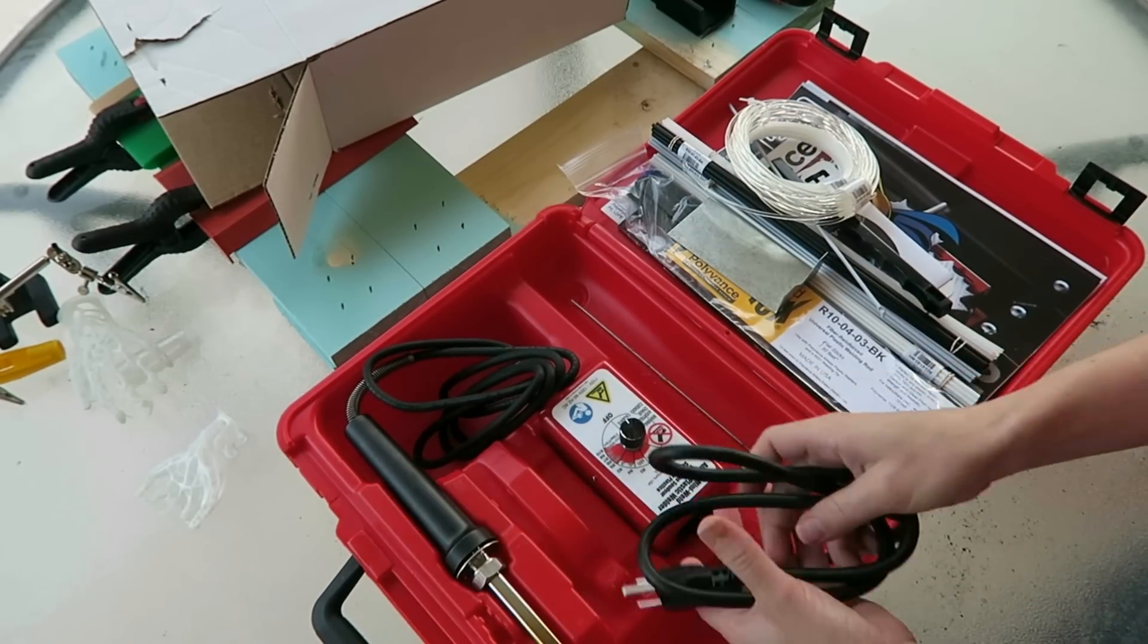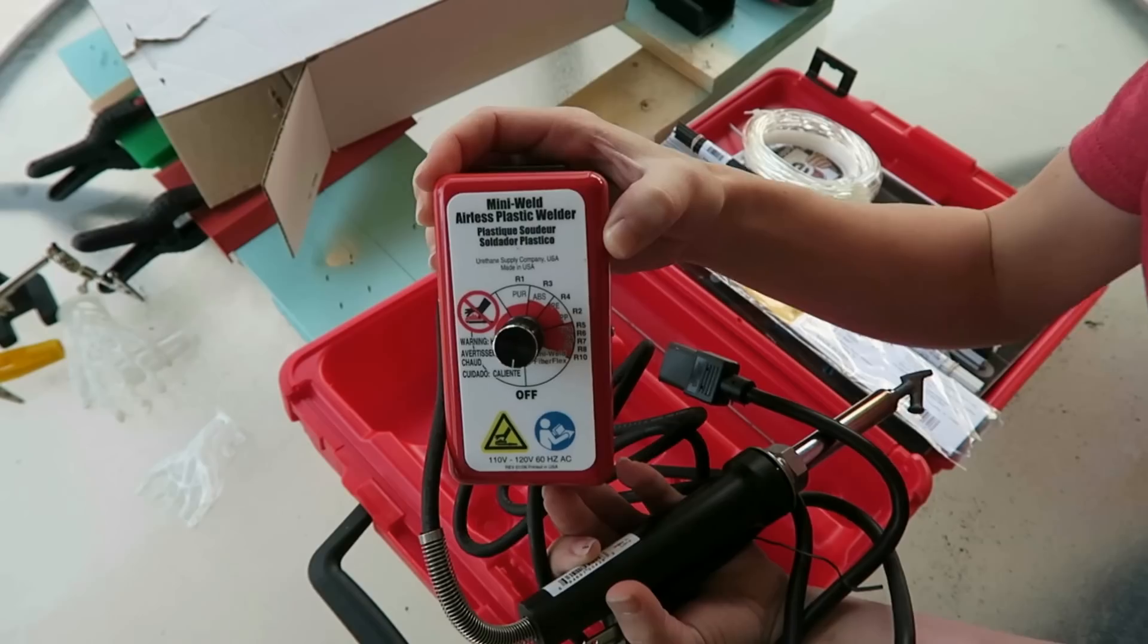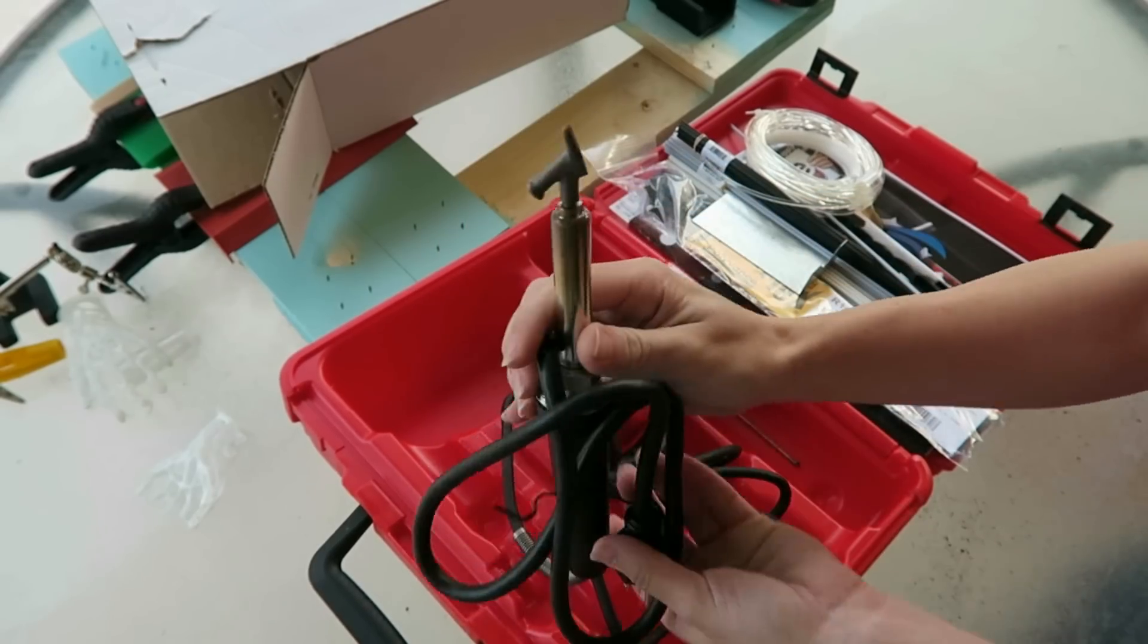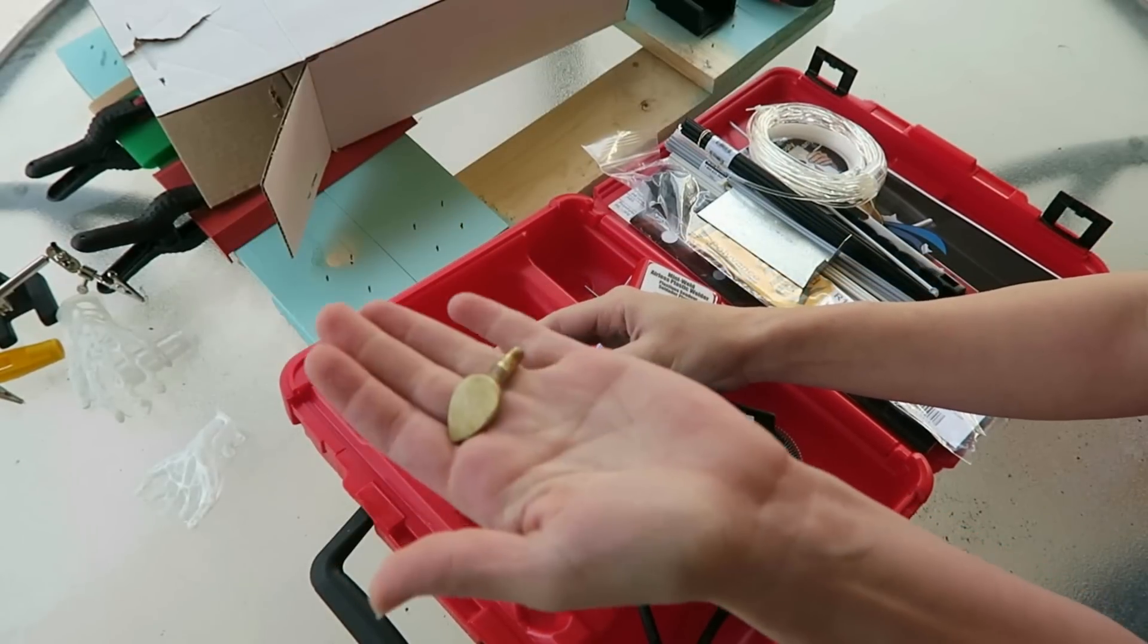Then there's the welding rig itself, which consists of a temperature control unit, the wand, and two hot tips - one for plastic rods and one for FiberFlex. It's a plug-and-play setup, so let's do exactly that.